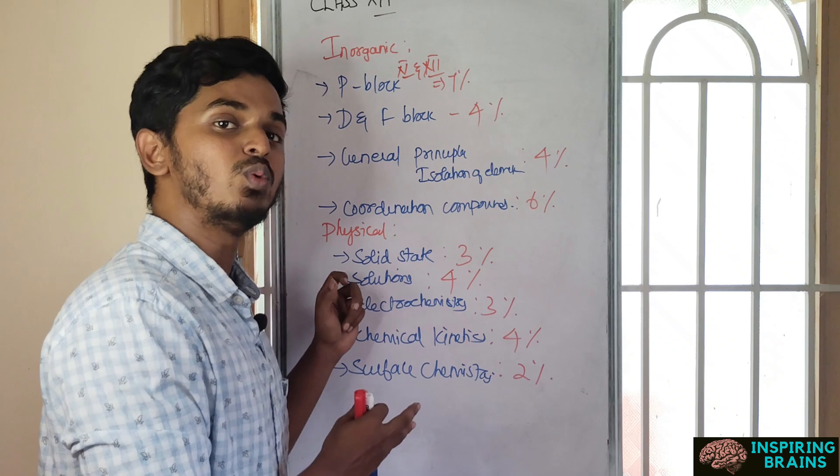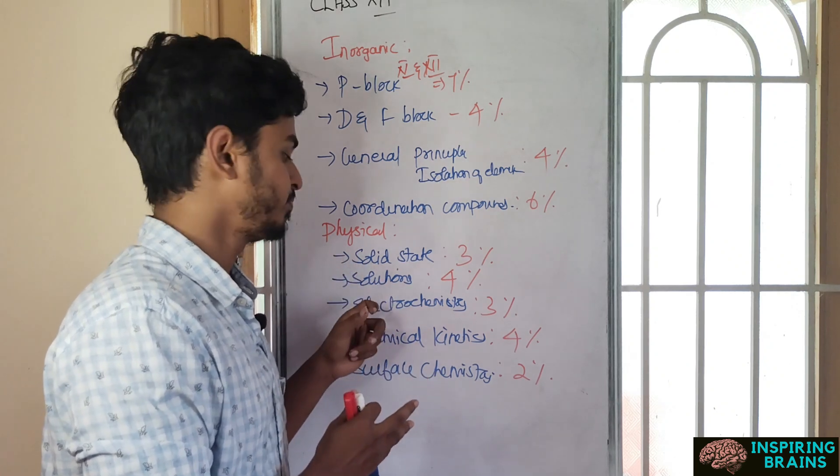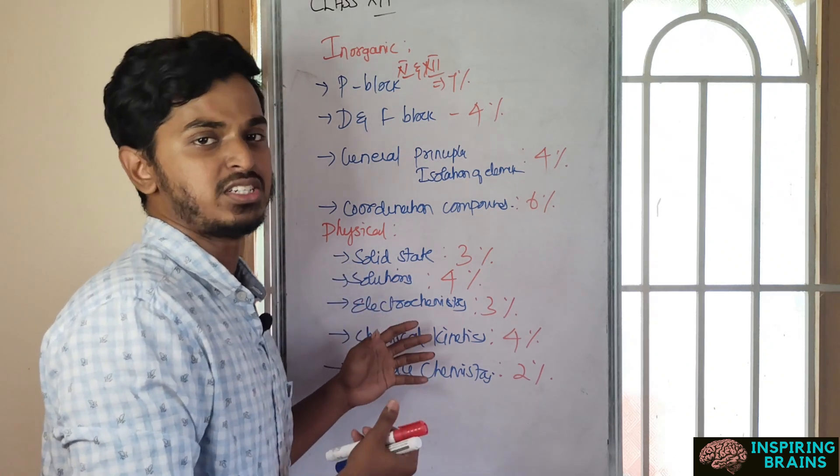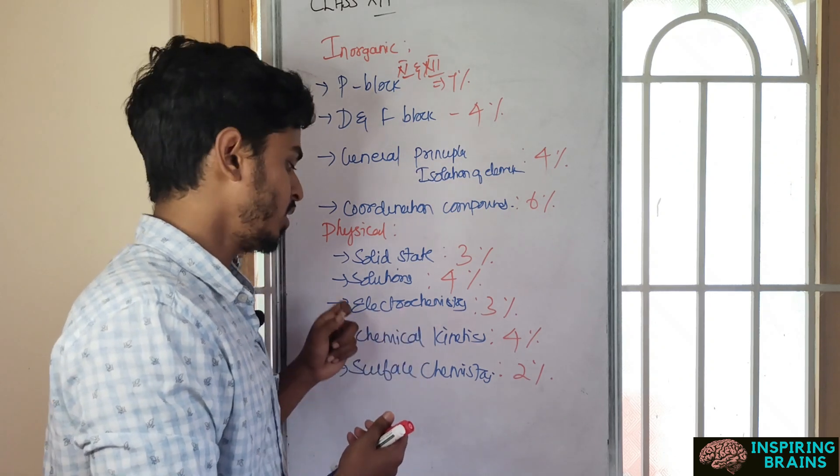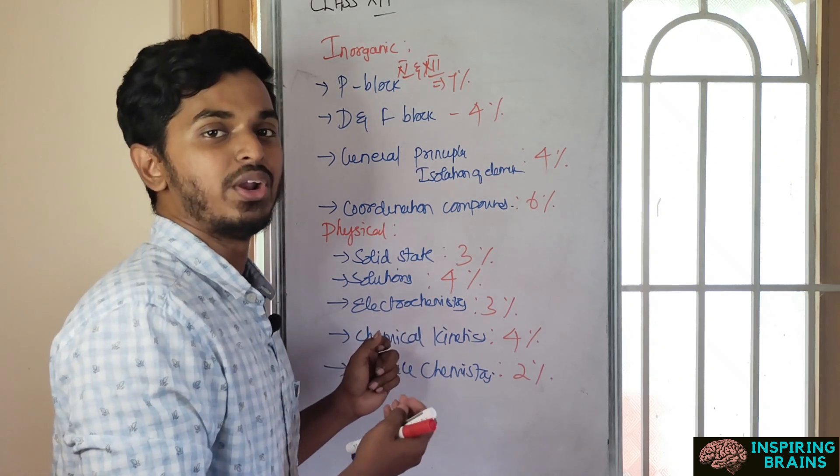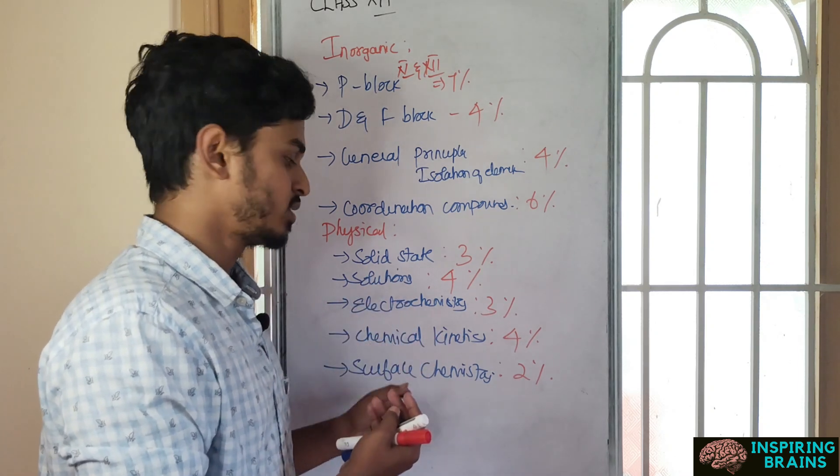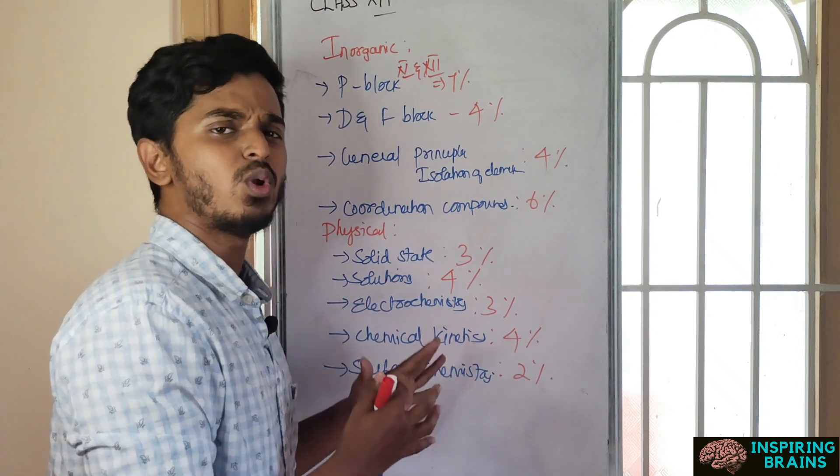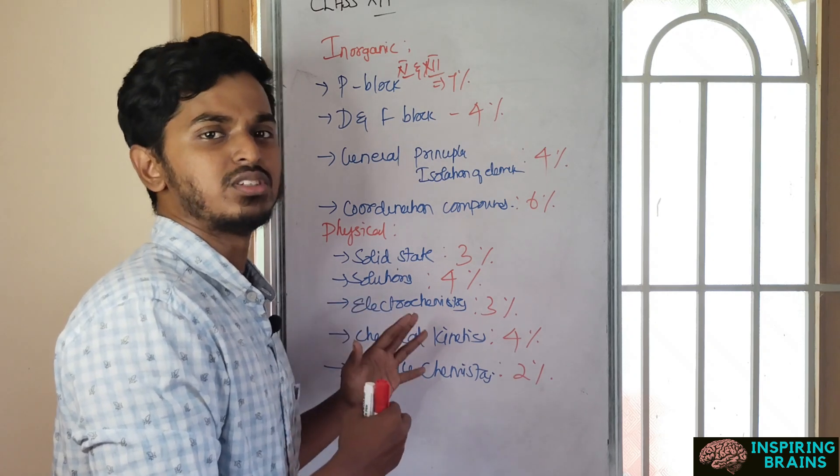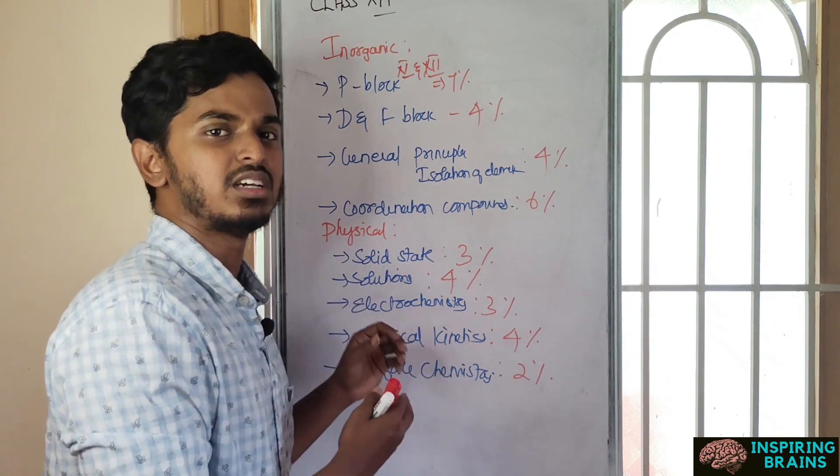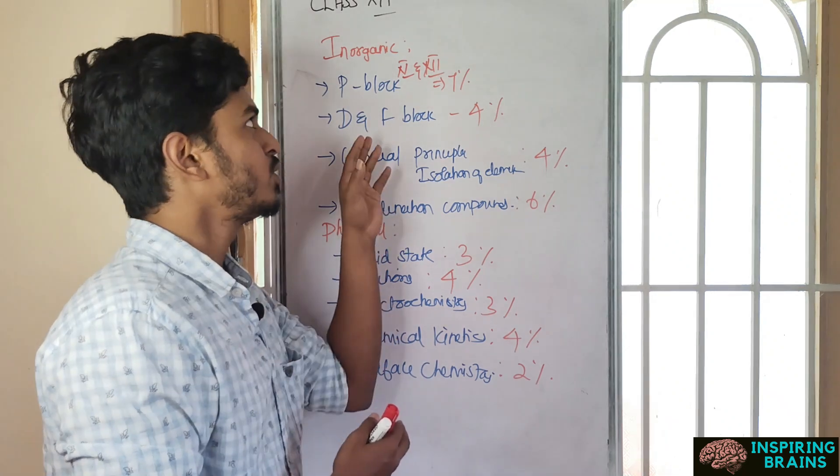Go with electrochemistry - the cells, Nernst equation, Gibbs free energy. Chemical kinetics - first order, second order, various graphs. Finally surface chemistry - more or less direct questions on adsorption, catalyst. This is all about inorganic and physical chemistry.